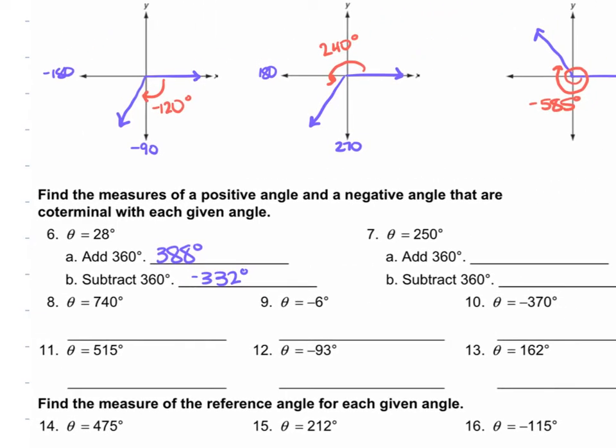For number 7, we have 250 degrees. If we add 360, we're at 610. If we subtract 360 from that, we get negative 110 degrees.